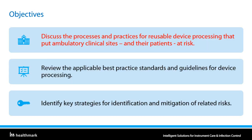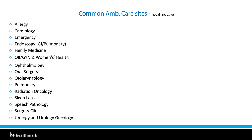Let's start with our first objective: what are the reusable device processes and practices that create the risk? What you see here is an example list of clinical sites that can fall under the ambulatory care sphere within a healthcare organization, ranging from a hospital-based emergency department to an off-site family practice clinic miles away. Depending on the individual organization, some of these may or may not be included, but an important point is that the majority are clinics.